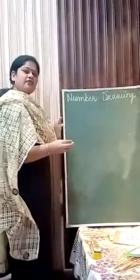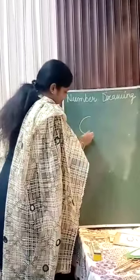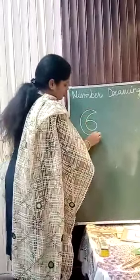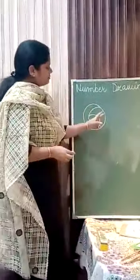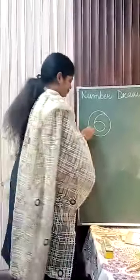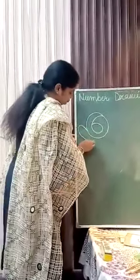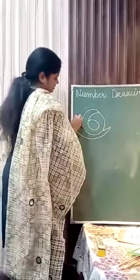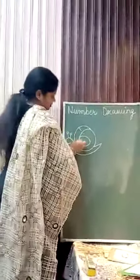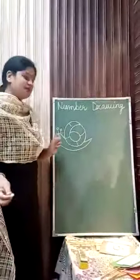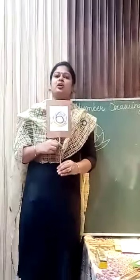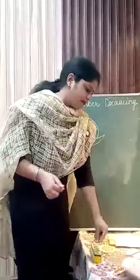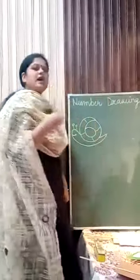So first of all we take number 6. Children, you write like this — number 6 — and draw a circle like this. We will draw the circle so that the 6 comes inside it, and from here, like this. Very easy. This is a snail, children. See, I made it on paper for you and you can also make like this and colour it nicely.